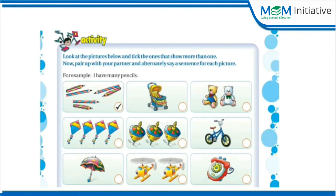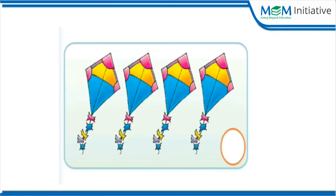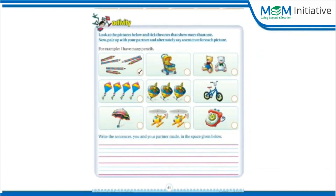Now come to page number 41 of your book. We can see some pictures here. Some pictures have only one thing while other pictures have more than one thing. You have to take those pictures which show more than one thing, and then write a sentence for each picture. So tell me, what will you write for this picture? We can write: 'There are some kites.' We can also write: 'Kites fly in the air.' Or we can use some other sentence. Similarly, you have to write a sentence for each of these pictures.